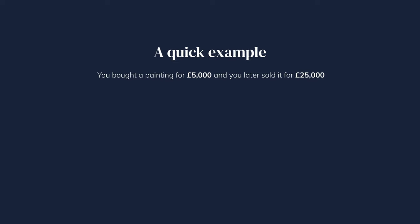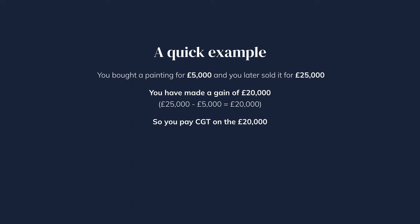For example, if you bought a painting for £5,000 and you sold it later on for £25,000, you made a gain of £20,000 — the £25,000 minus the £5,000 you paid for it — and that's the amount that you pay your capital gains tax on. Some assets are tax-free, and you don't have to pay capital gains tax if all of your gains in a year are under your tax-free allowance, which I'll go into later.